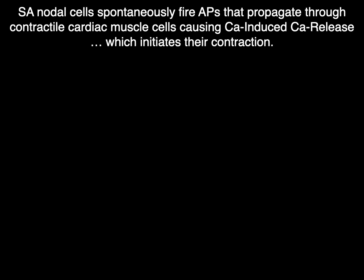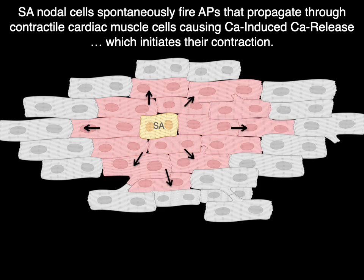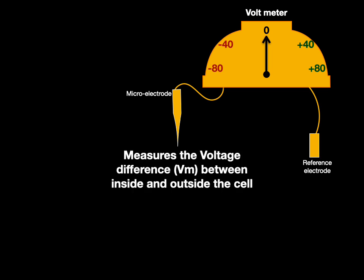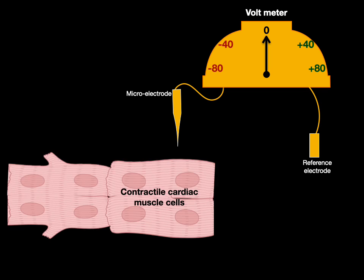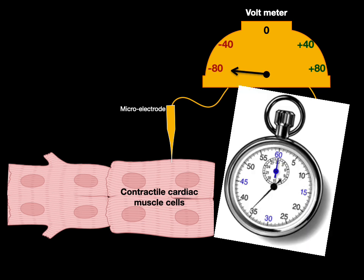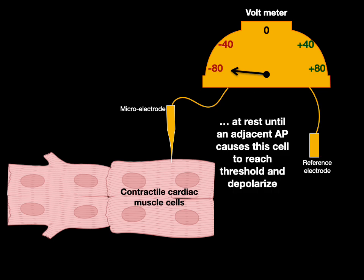SA nodal cells spontaneously fire action potentials that propagate through contractile cardiac muscle cells, causing calcium-induced calcium release which initiates their contraction. Here's a voltmeter with its microelectrode and reference electrode — this measures the voltage difference between the inside and outside of a cell membrane. When you put the microelectrode inside a contractile cardiac muscle cell, it measures negative 80 millivolts and stays that way at rest, unlike SA nodal cells that have automaticity. This contractile cell will stay at negative 80 millivolts until an adjacent action potential causes the cell to reach threshold at about negative 60 millivolts, and then it depolarizes.